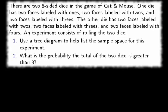There are two six-sided dice in the game of cat and mouse. One die has two faces labeled with ones, two faces labeled with twos, and two faces labeled with threes. The other die has two faces labeled with twos, two faces labeled with threes, and two faces labeled with fours.